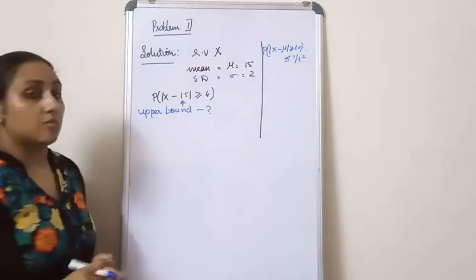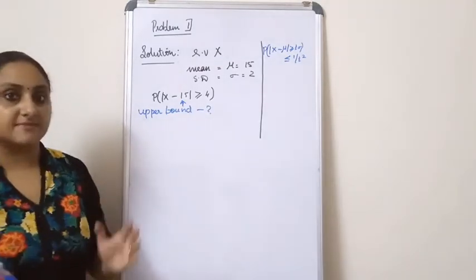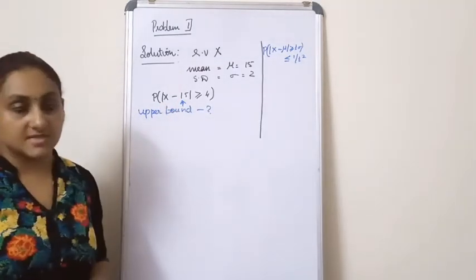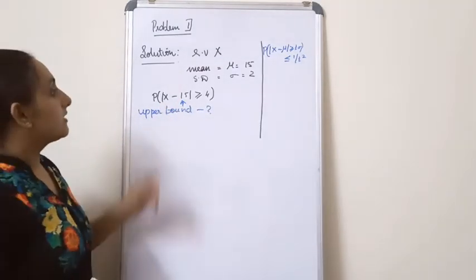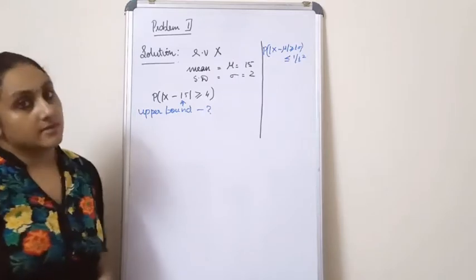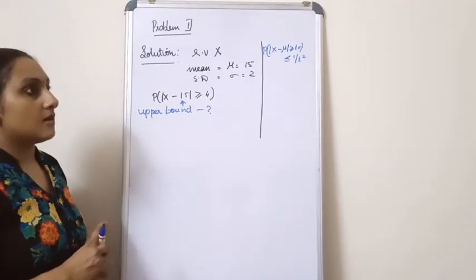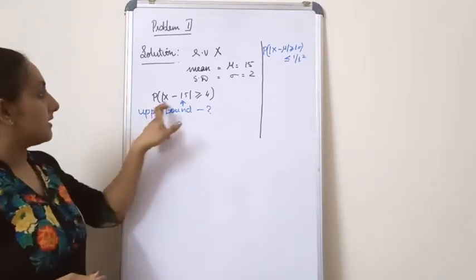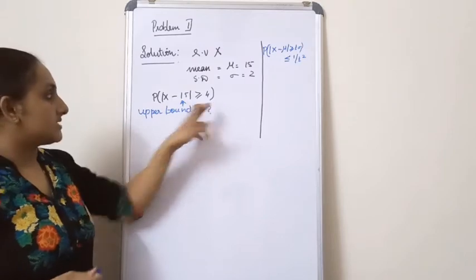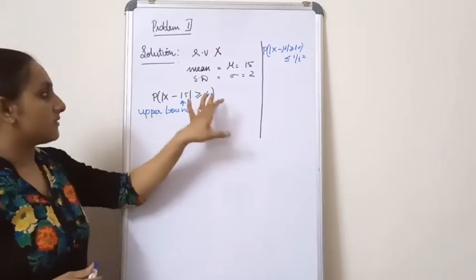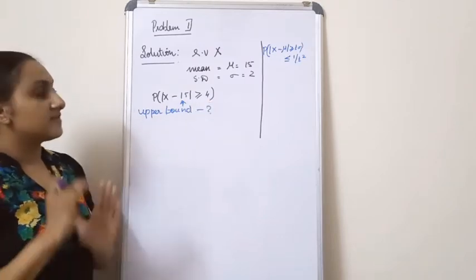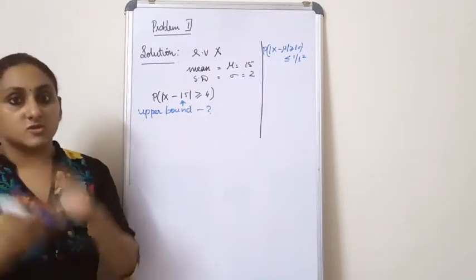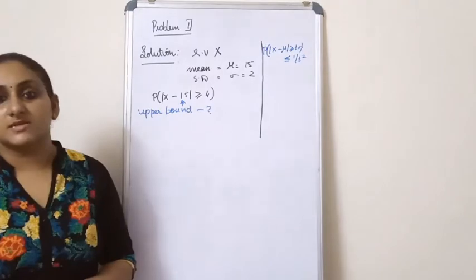What is the probability? It is the probability of |X minus 15| greater than or equal to 4. Now, this probability looks somewhat similar to the Chebyshev's inequality.